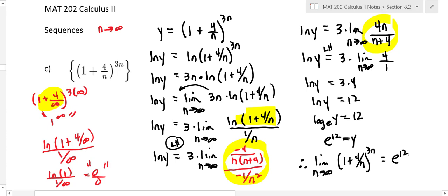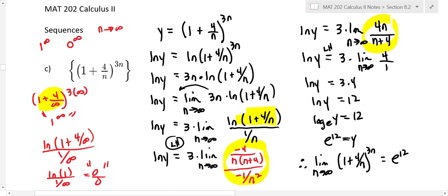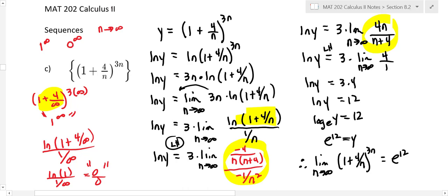You wouldn't have known that without going through the analysis. If you put it on a graphing calculator, it does level off at e to the twelfth. When dealing with indeterminate forms like one to the infinity, zero to the infinity, or infinity to the infinity, that's when you use natural logarithms. Also, make sure you're in zero over zero or infinity over infinity form before applying L'Hôpital's rule.